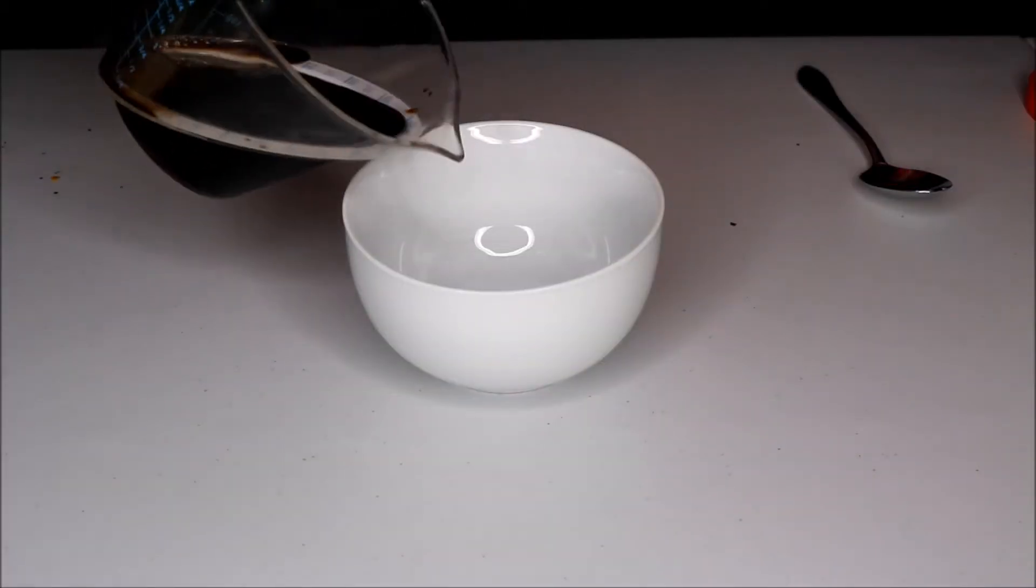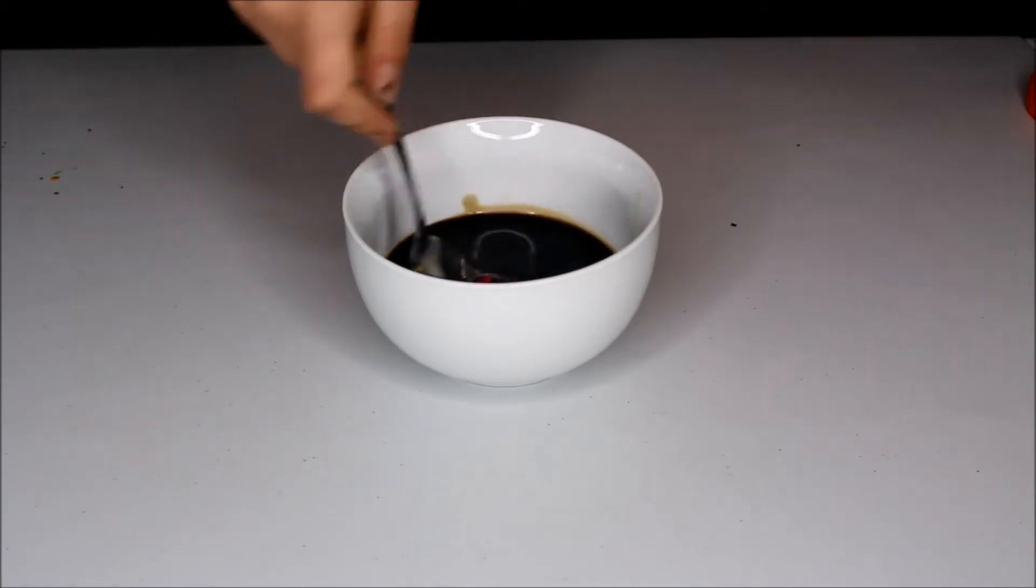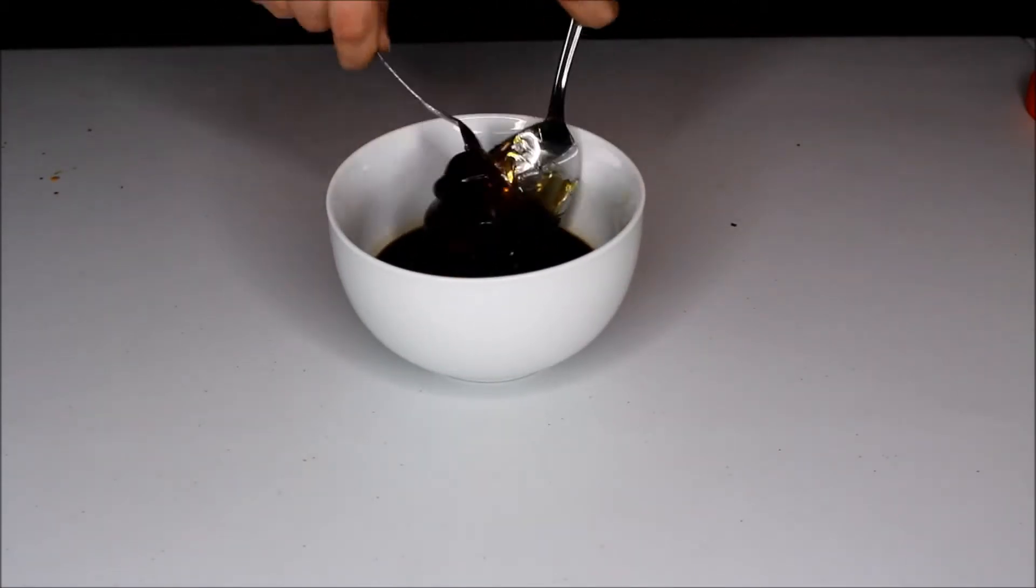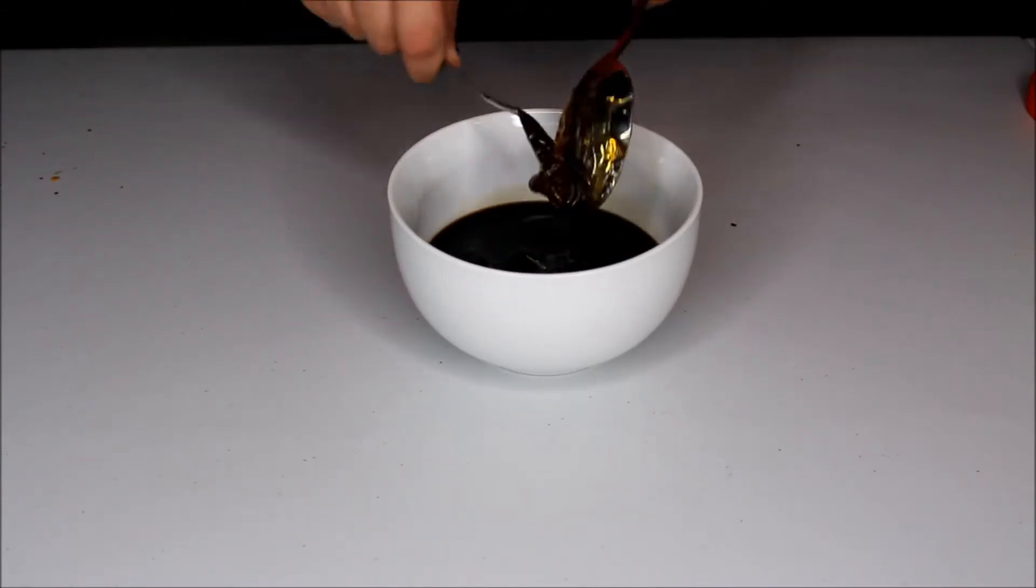For this recipe, you will need half cup of balsamic vinegar and three tablespoons of dark honey and then I microwaved it for a minute just so the honey can really melt into the vinegar.